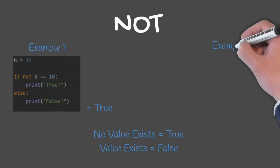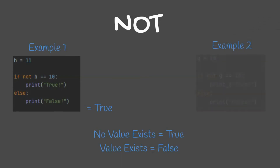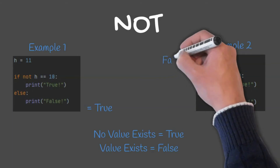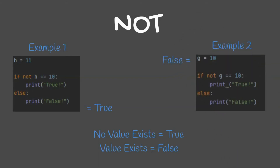In our next example, G equals 10. If NOT G equals 10, print true, or else print false. In this example, it would print false because G does equal 10.